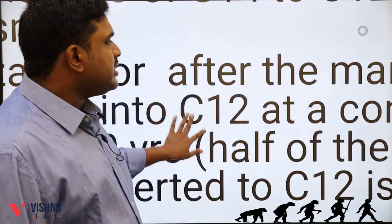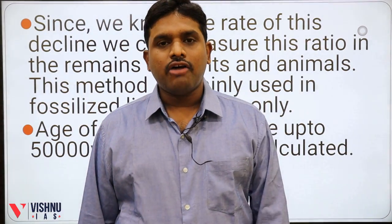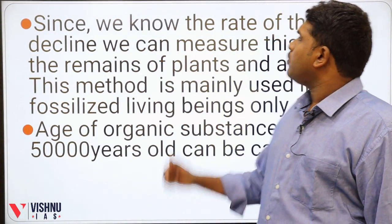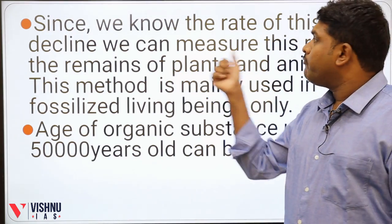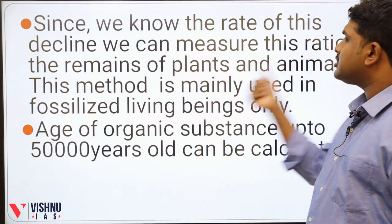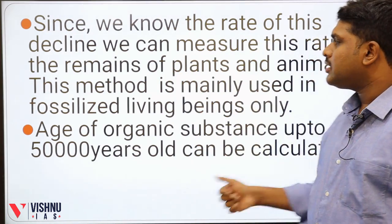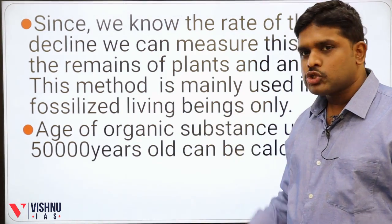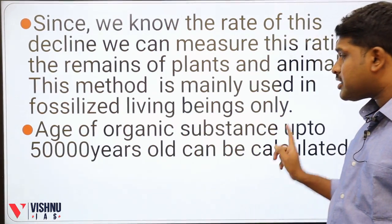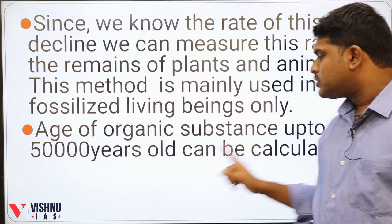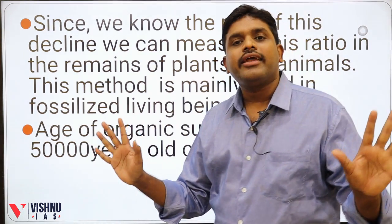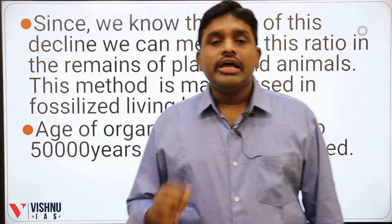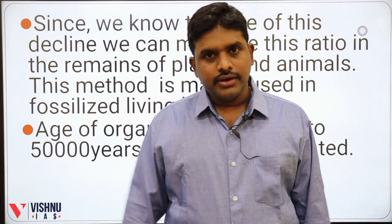Since we know the rate of this decline, we can measure this ratio in the remains of plants and animals. This method is mainly used for fossilized living beings only. The age of organic substances up to 50,000 years old can only be calculated using this method. This is the radiocarbon dating method.